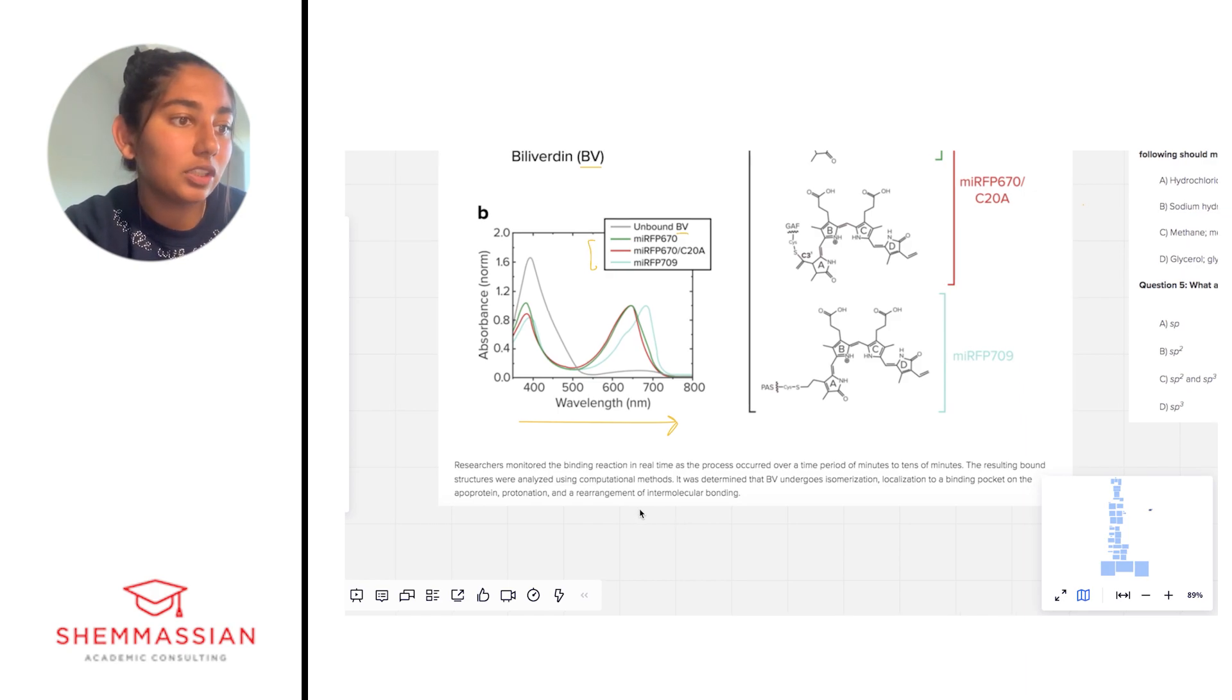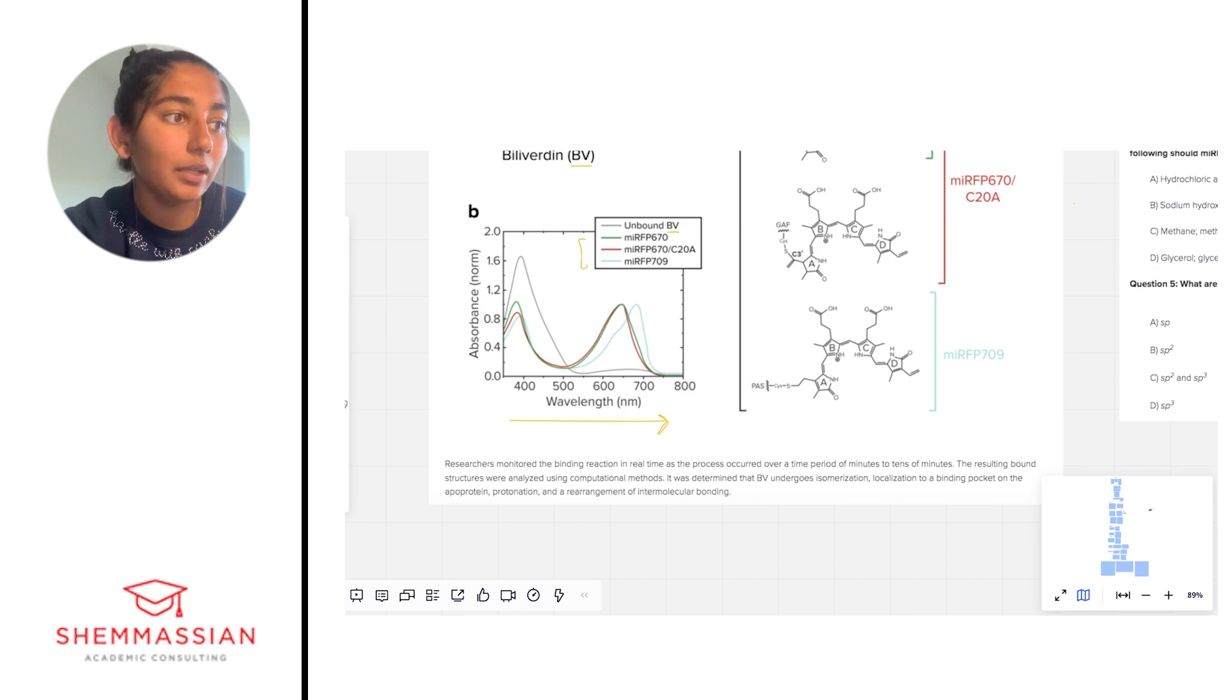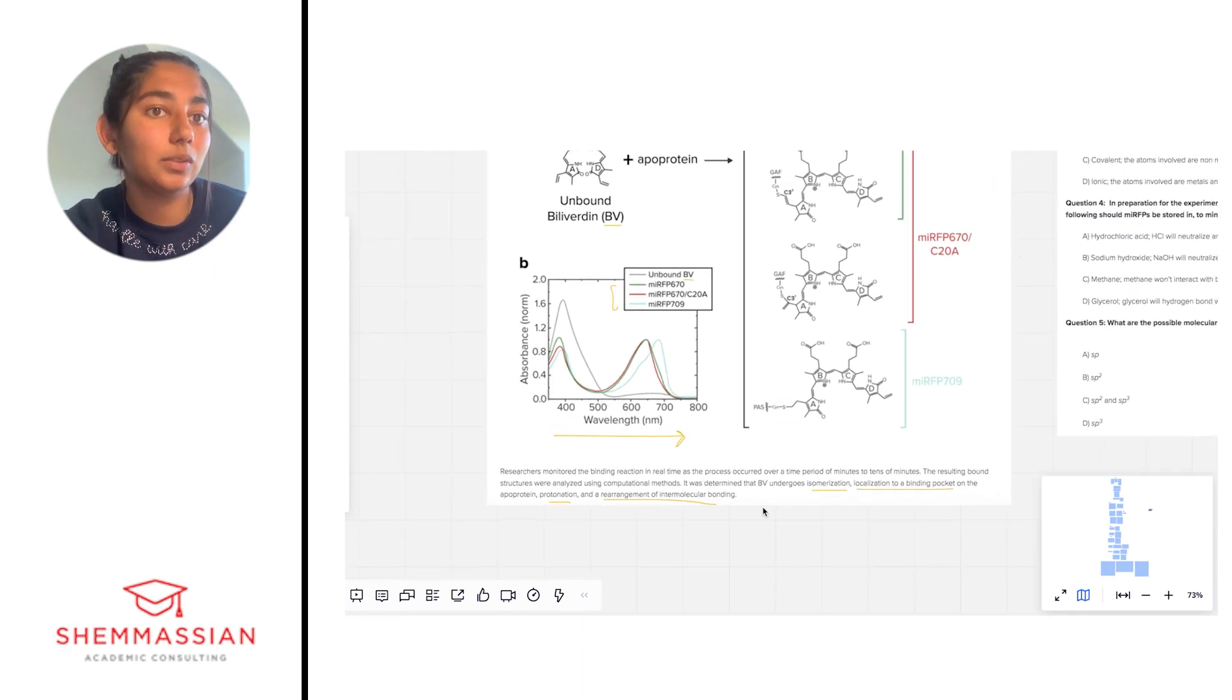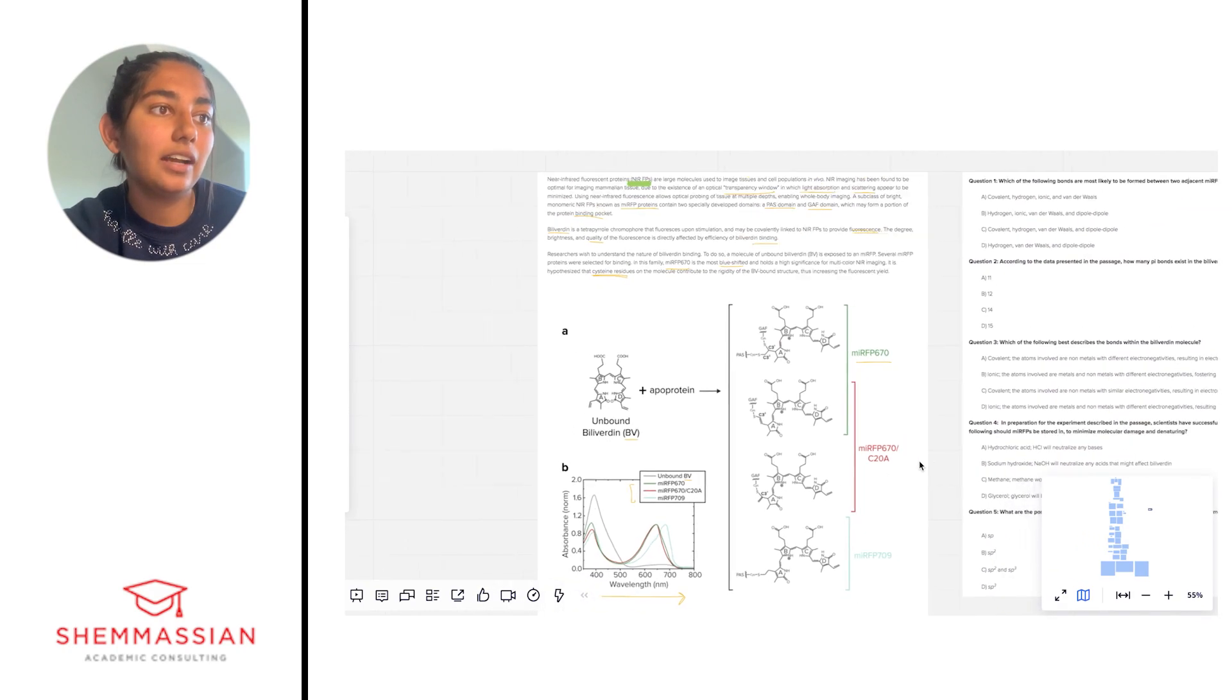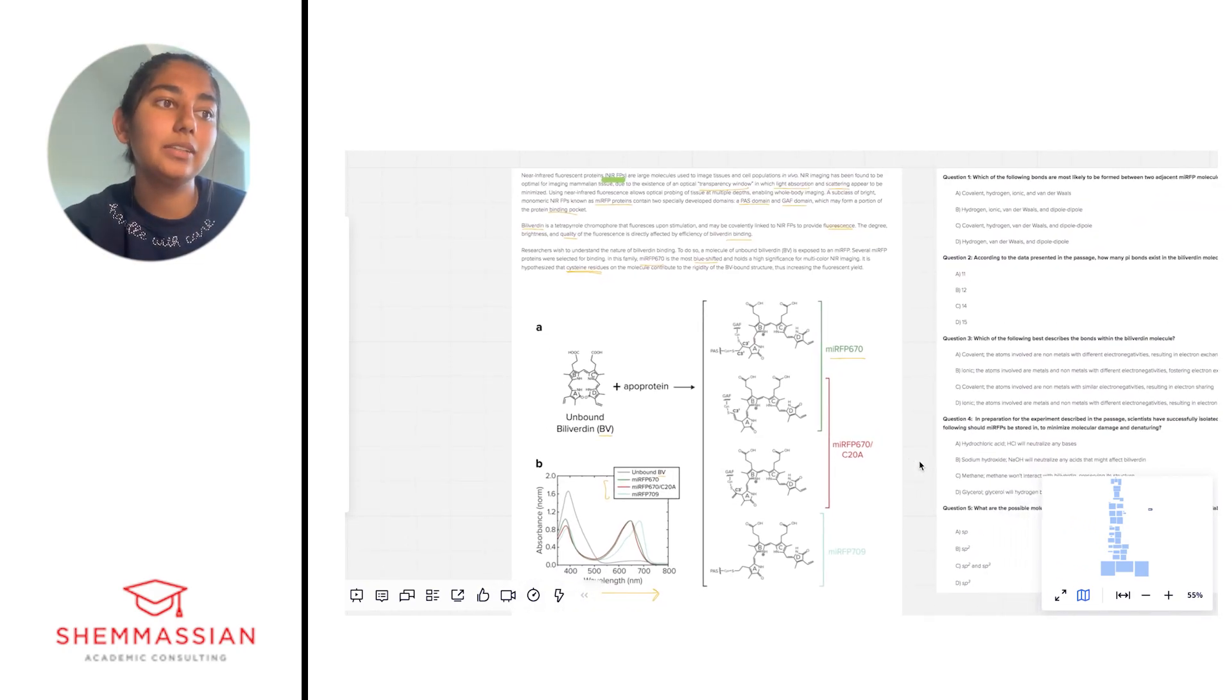Researchers monitored the binding reaction in real time as the process occurred over a time period of minutes to tens of minutes. The resulting bound structures were analyzed using computational methods. It was determined that BV undergoes isomerization, localization to a binding pocket on the apoprotein, protonation, and rearrangement of intermolecular binding. Those are four things that happen to this BV molecule—maybe one of the questions will be about how that relates to the BV molecule structure. Overall we have an idea of what this BV molecule is, how it can be tagged for fluorescence and measured in absorption spectra. Now let's get into the questions.